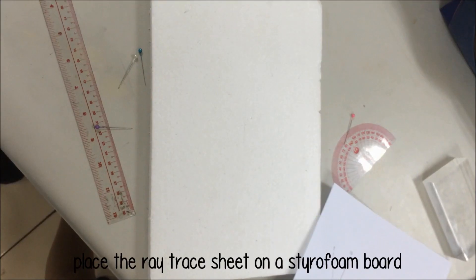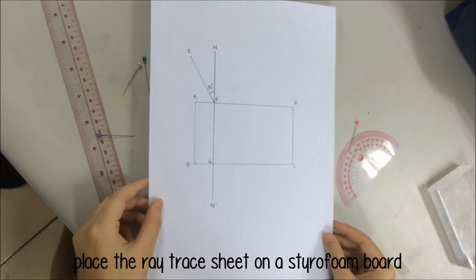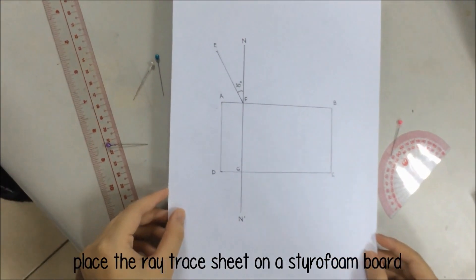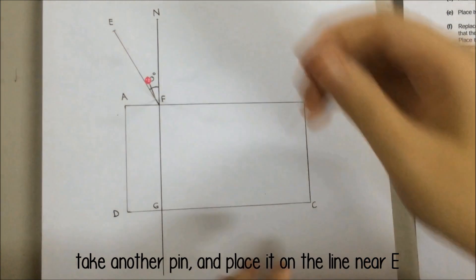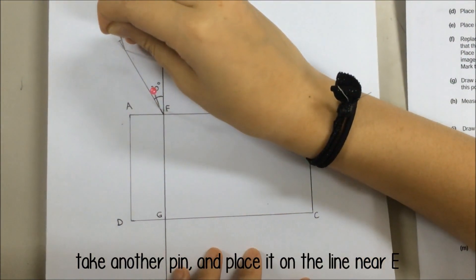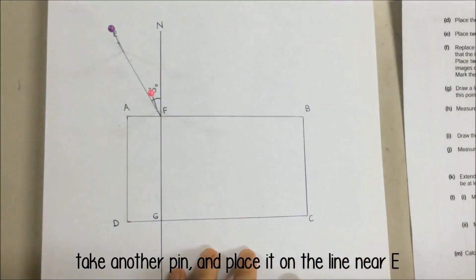Step 5: Place the ray trace sheet on a styrofoam board. Step 6: Take one pin and place it on the line near point F. Take a second pin and place it on the line near point E.